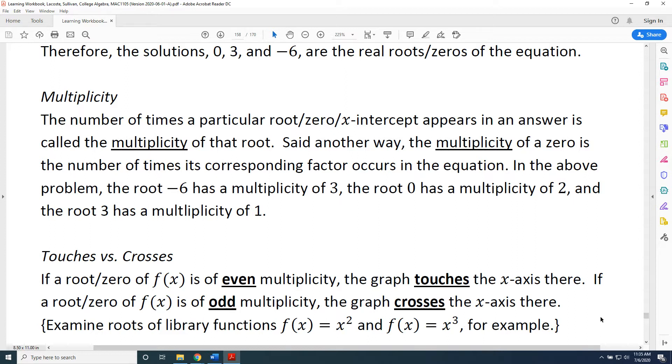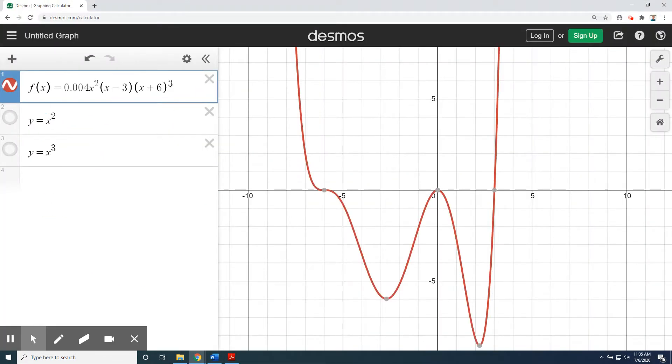With this in mind, let's go ahead and start now by taking a look at the graph of the function that we were working with a moment ago. You might recall that that function was f(x) equals 0.004x² times the factor (x - 3) times the factor (x + 6)³. I've entered this into the Desmos graphing calculator.